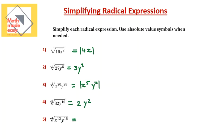Last question: fourth root, even index, so I need an absolute value. The fourth root of x to the power of 12 is x cubed, and the fourth root of y to the power of 16 is y to the power of 4. After putting everything in the absolute value, check the exponents: x cubed has an odd exponent so it stays inside; y to the fourth has an even exponent so it comes out. Final answer: y⁴ times absolute value of x cubed. I hope this seems easier now. We'll cover more complicated questions in the next video — thanks for watching!